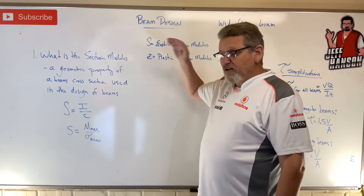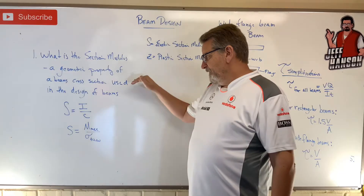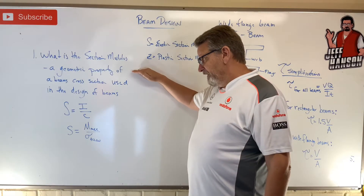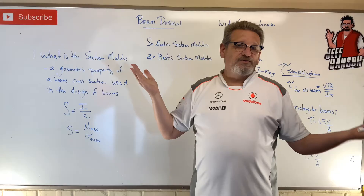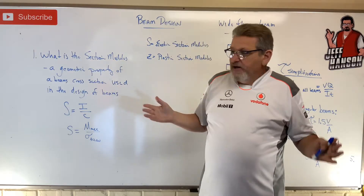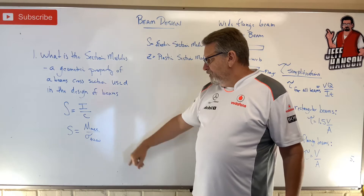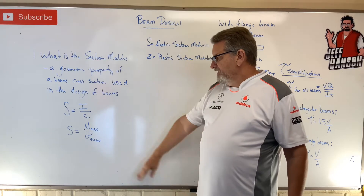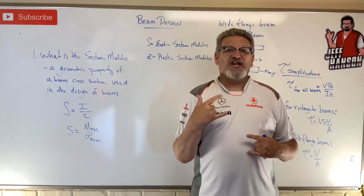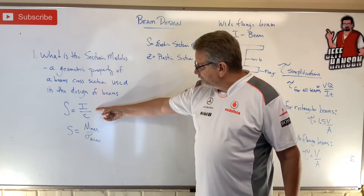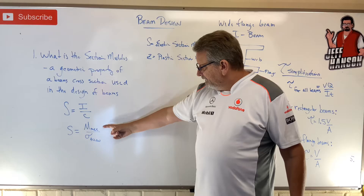One of the things we calculate to determine which beam we need is something called the section modulus. It's a geometric property of a beam's cross section used in the design of beams, which is exactly what we're doing here.